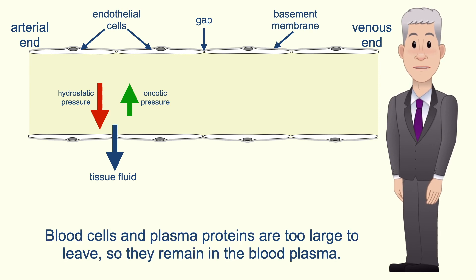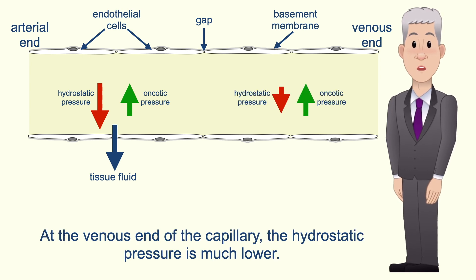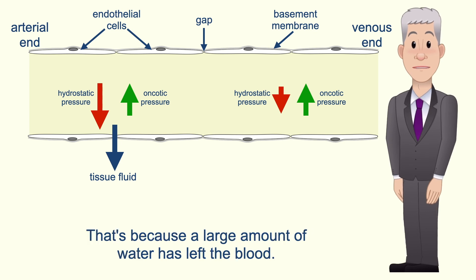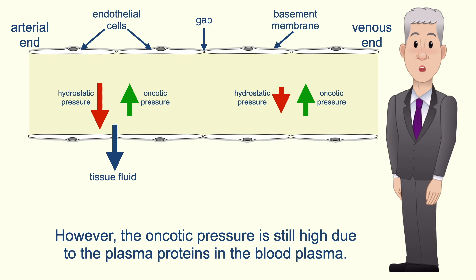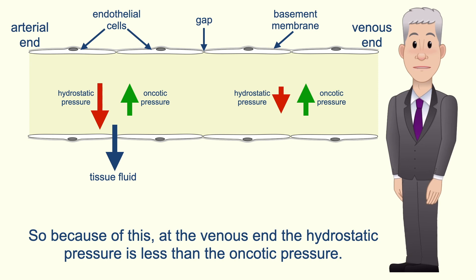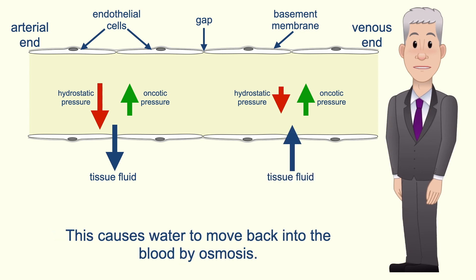At the venous end of the capillary the hydrostatic pressure is much lower, because a large amount of water has left the blood. However, the oncotic pressure is still high due to the plasma proteins in the blood plasma. So at the venous end, the hydrostatic pressure is less than the oncotic pressure, and this causes water to move back into the blood by osmosis.